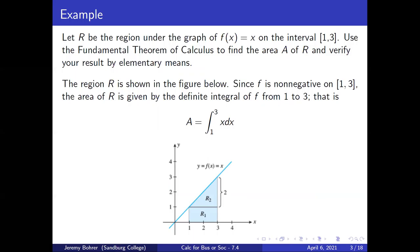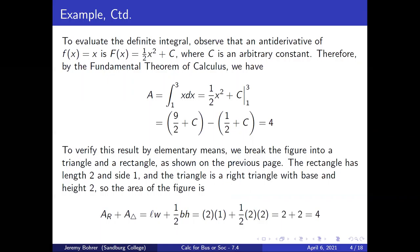Let R be the region under the graph of f(x) = x on the interval from one to three. Use the fundamental theorem of calculus to find the area A of R and verify your result by elementary means. The region R is shown in the figure. Since f(x) = x is non-negative on [1, 3], the area of R is given by A equals the integral from one to three of x dx.